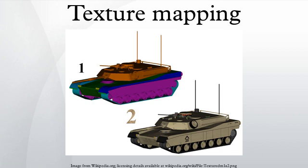Multitexturing is the use of more than one texture at a time on a polygon. For instance, a light map texture may be used to light a surface as an alternative to recalculating that lighting every time the surface is rendered. Another multi-texture technique is bump mapping, which allows a texture to directly control the facing direction of a surface for the purposes of its lighting calculations. It can give a very good appearance of a complex surface, such as tree bark or rough concrete, that takes on lighting detail in addition to the usual detailed coloring.